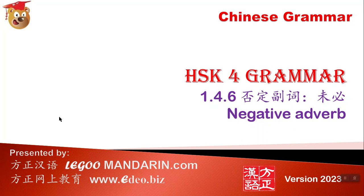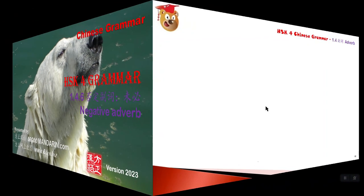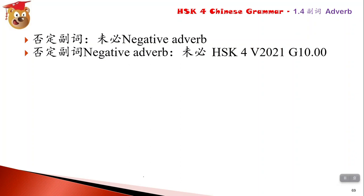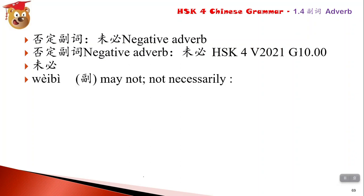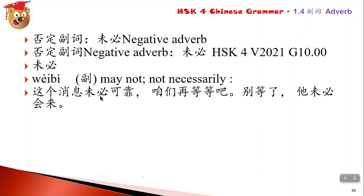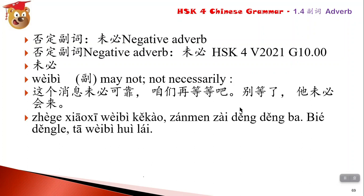Part 6 covers 否定副词 - negative adverbs. 未必 means 'may not' or 'not necessarily.' For example: 这个消息未必可靠，咱们再等等吧 - this news is not necessarily reliable, let's wait a bit. 别等了，它未必会来 - don't wait; it may not come.